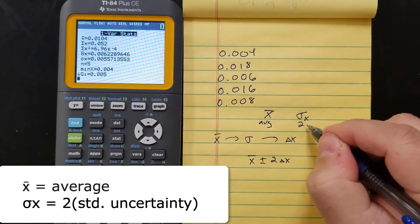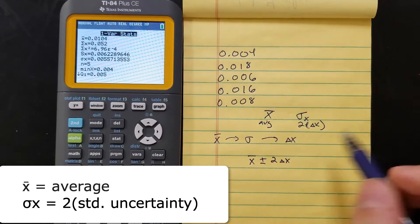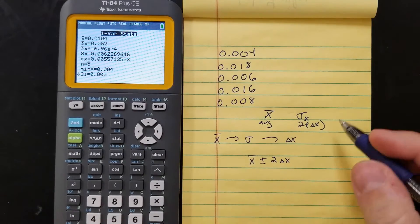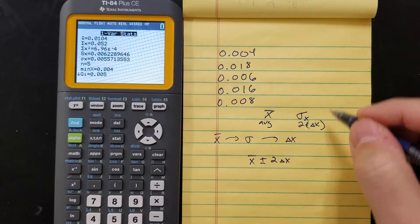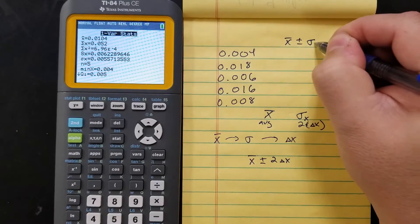And this is two times your standard uncertainty. So this is the number plus or minus that number. The way you're going to write it is going to look like average plus or minus sigma X.